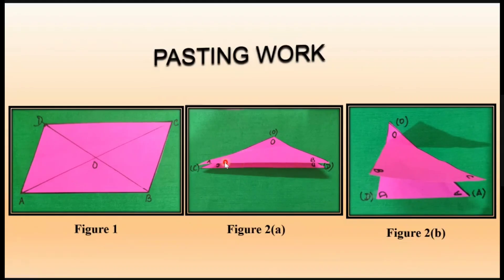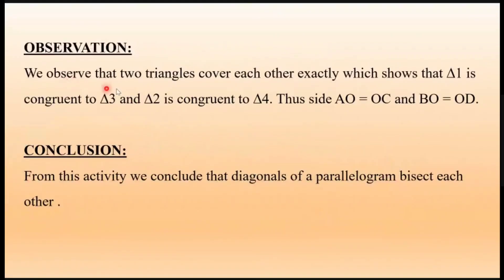Since the triangles are congruent, AO is equal to CO and BO is equal to DO. That means the diagonals bisect each other. The observation is that the two triangles cover each other exactly, which shows triangle 1 is congruent to 3 and 2 is congruent to 4. Thus side AO equals OC and BO equals OD. The conclusion from the activity is that we conclude the diagonals of the parallelogram bisect each other. I hope the activity is clear to you. Thank you so much.